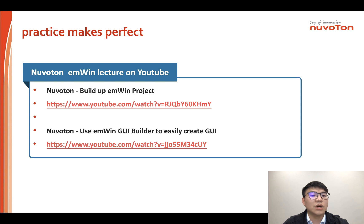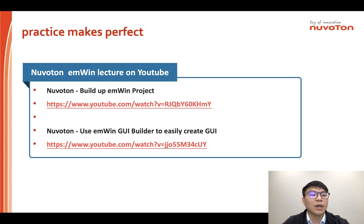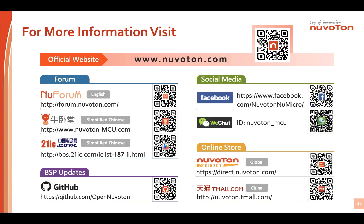If you haven't used EMWIN before, you can visit the two YouTube links to learn. The first link shows how to set up and do a hands-on EMWIN first HMI project. The second link shows how to use an image as a background and create a slider. This slide also shows NeuVertone's online resources including their website, online store, social media, and the NeuVertone GitHub page.